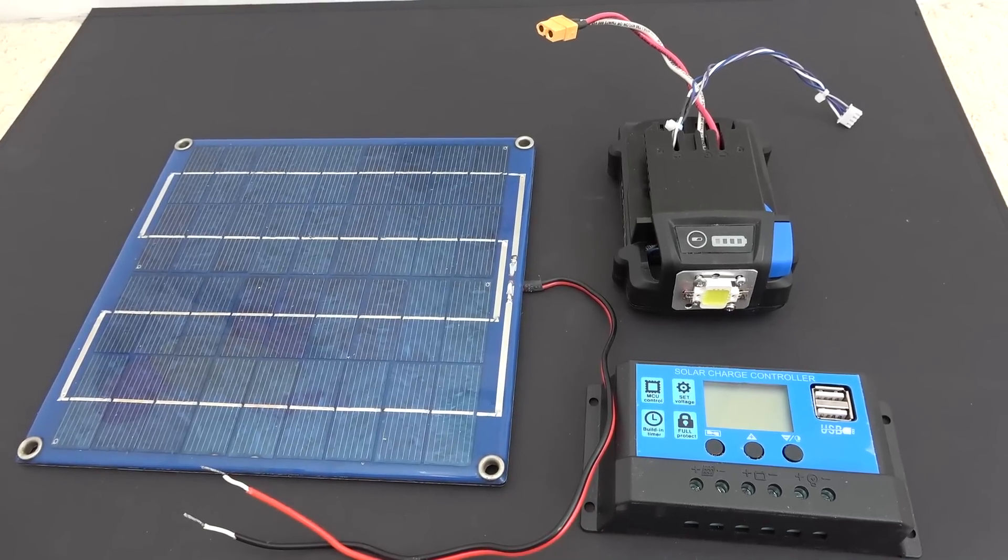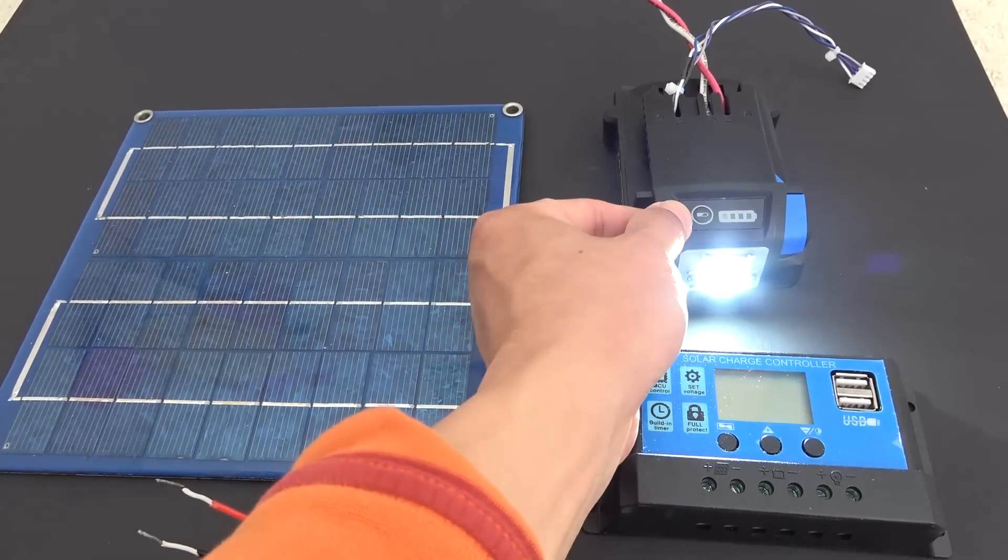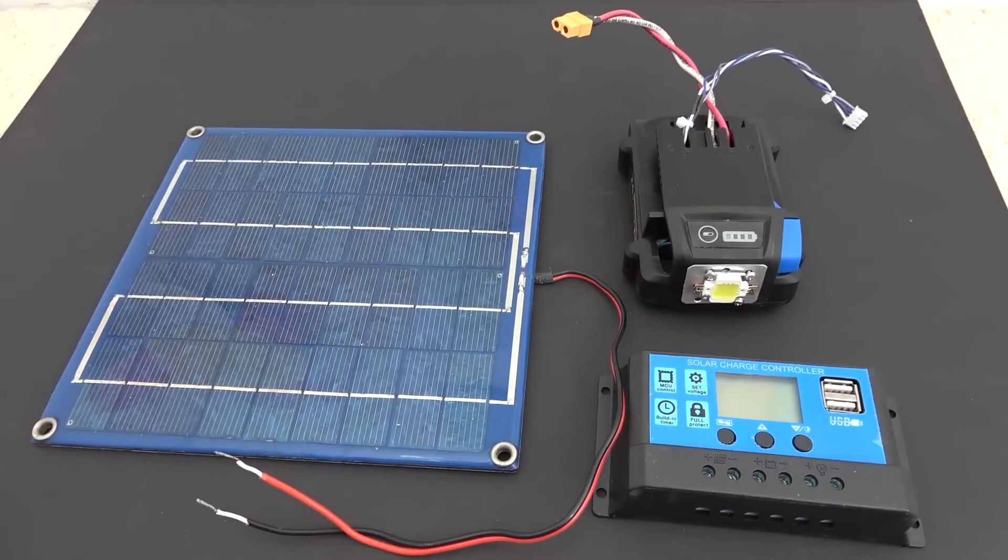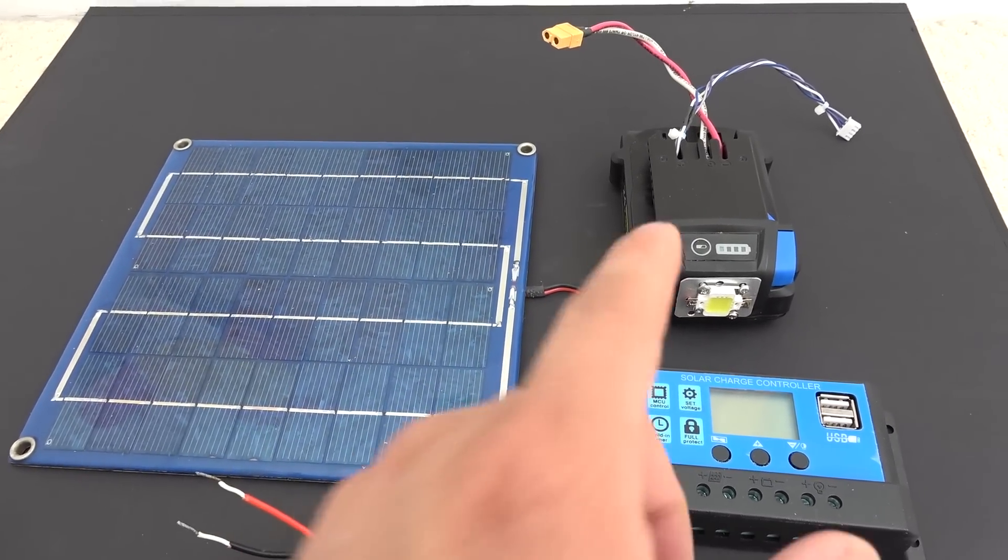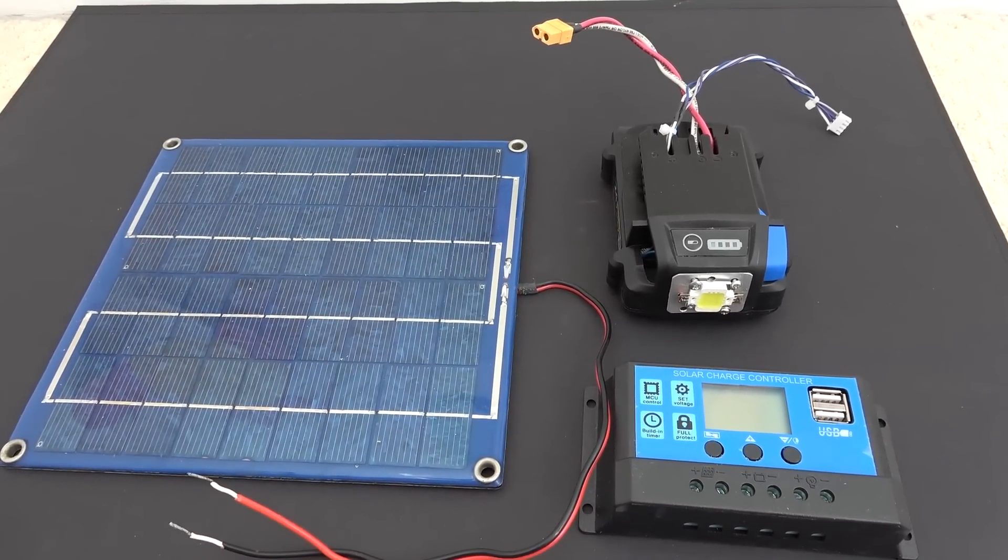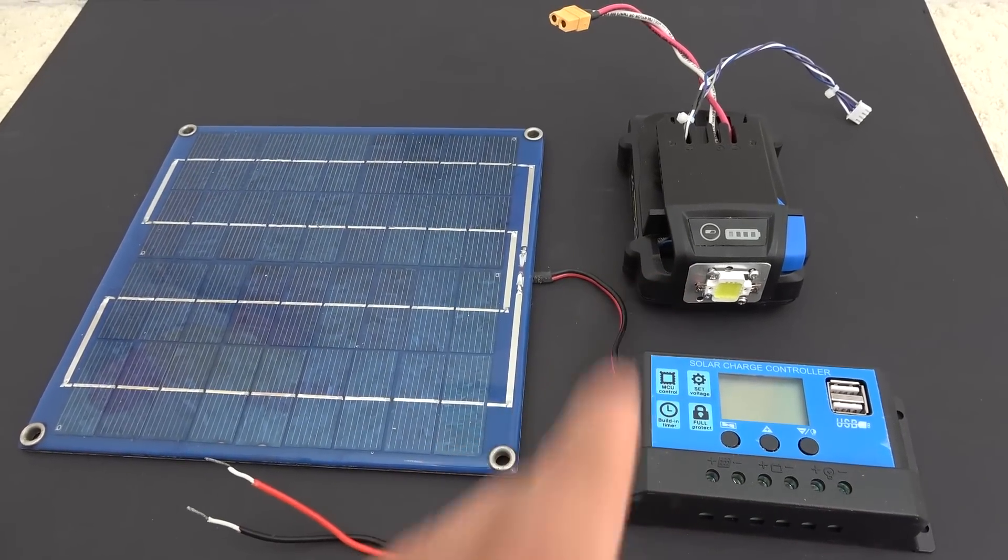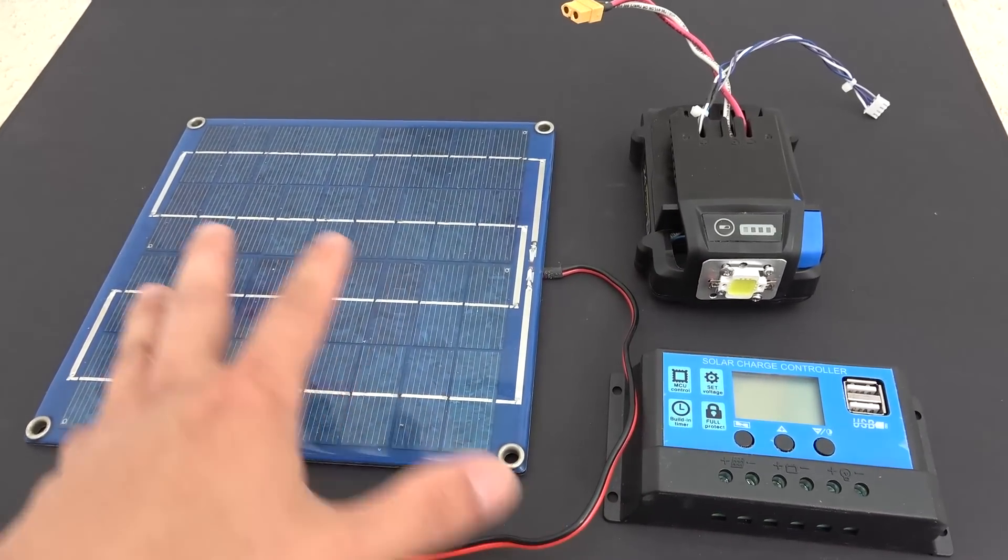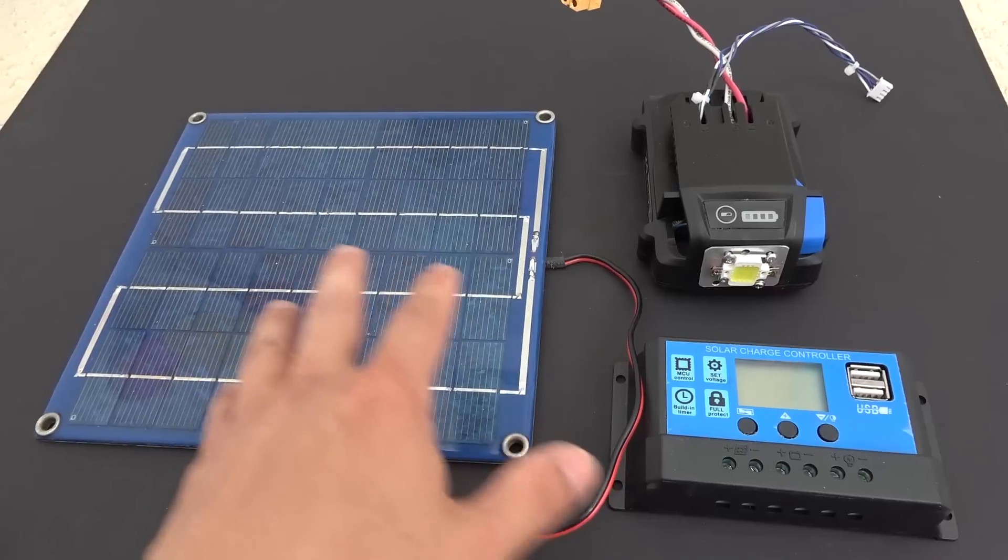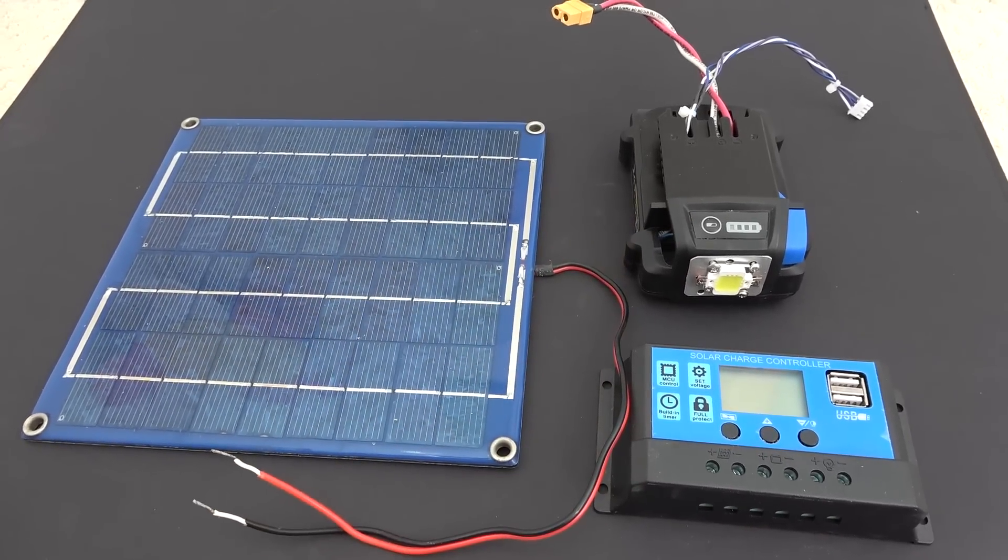So as you can see, this battery has so many uses, including a very bright flashlight. But my main purpose of building this battery is for a small solar power system. I need to have a battery that is powerful but small enough to carry in a backpack along with all of these. Next video I'm going to show you how I put everything together. Until then, see you later.